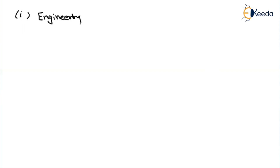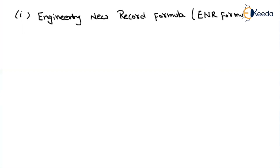In dynamic methods, we have two important methods. The first one is the Engineering News Record formula, simply called the ENR formula. The second one is the Hiley's formula. In the present video, we will discuss the Engineering News Record formula.